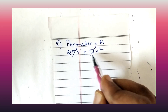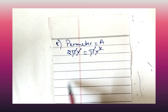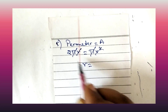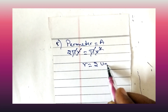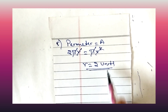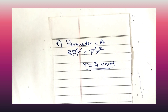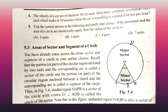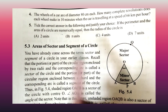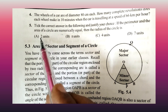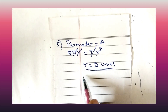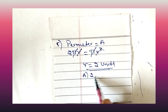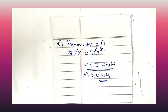Setting them equal: 2πr = πr². Cancelling π from both sides, then cancelling one r: 2 = r. So radius is equal to 2 units. Therefore option A, which is 2 units, is the correct answer.